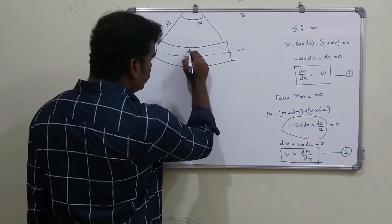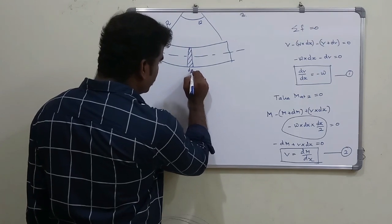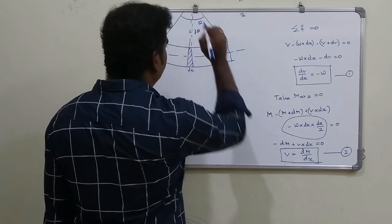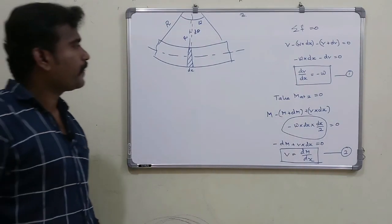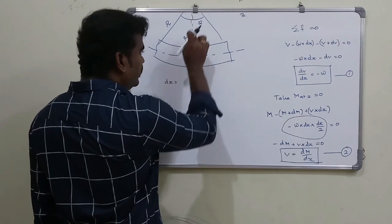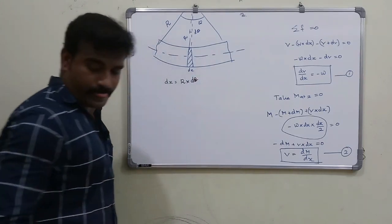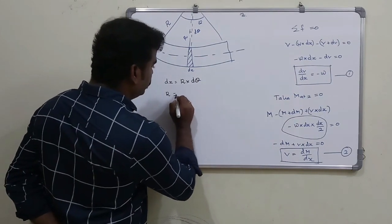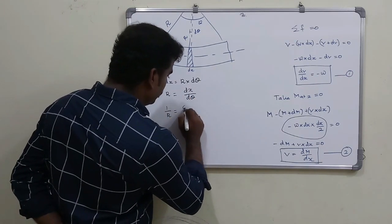This distance is dx and this angle is dθ. This is radius R — the same geometry. If you know that distance equals radius times angle, then dx equals R into dθ, so 1 by R equals dθ by dx.